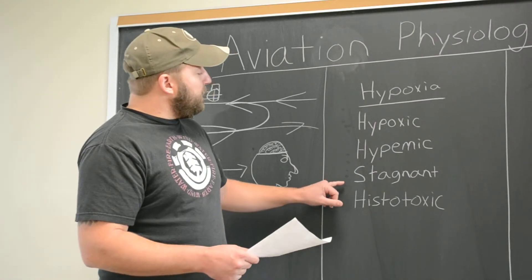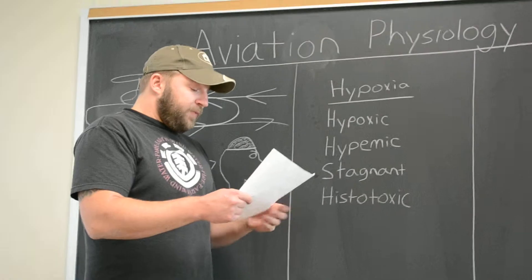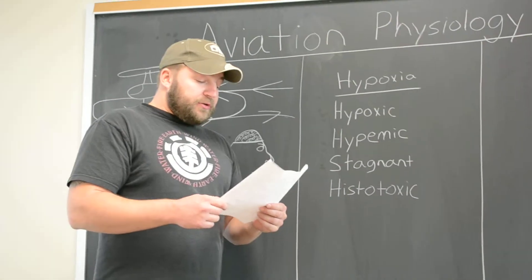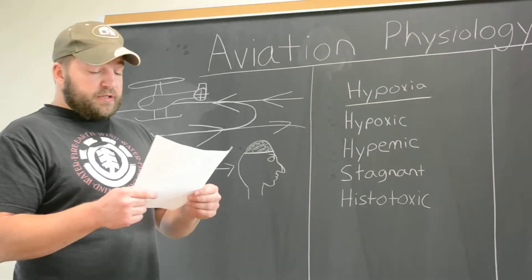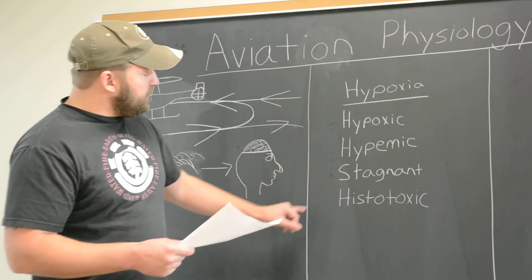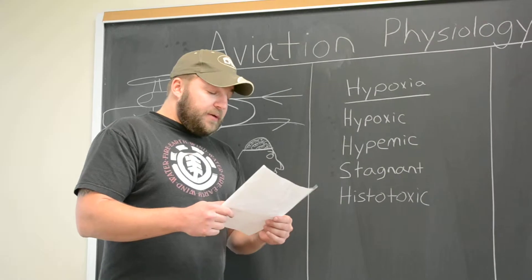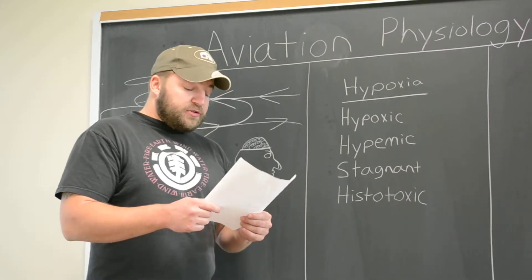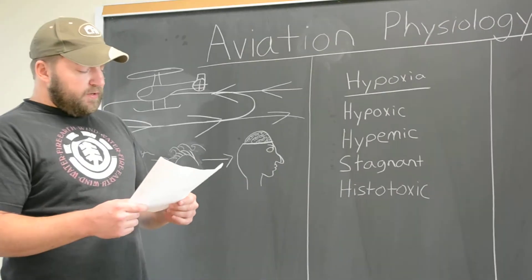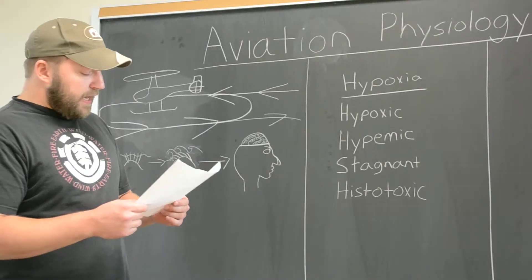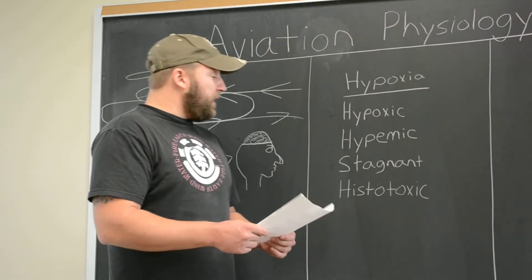The next type is stagnant hypoxia. This is caused by inadequate circulation of the blood and is generally caused by a heart problem or constricted artery. Histotoxic hypoxia is the inability of cells to effectively use oxygen. Alcohol is the most common contributor to this. Even small amounts of alcohol can affect your cell's ability to carry the oxygen.